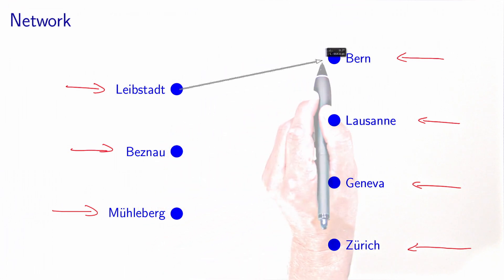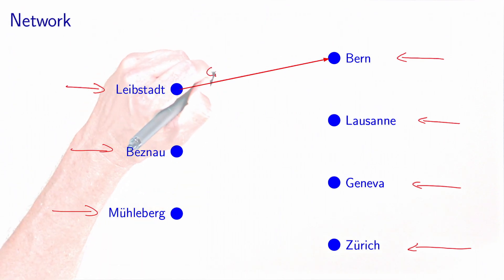So for example, Leibstadt can serve Bern. So we have a link here. And then what we do is that we associate with the link a cost, which is the unit cost that was presented in the previous table.